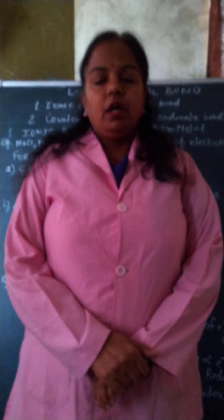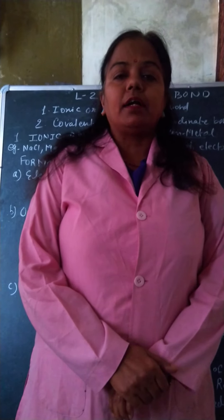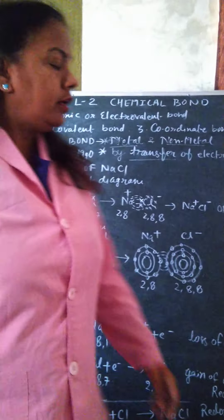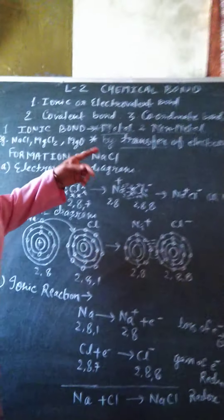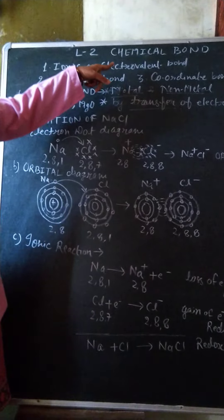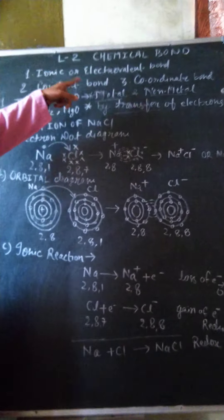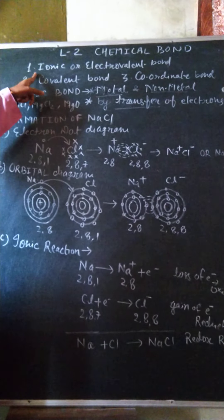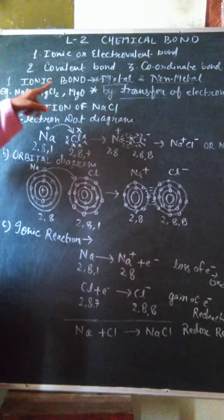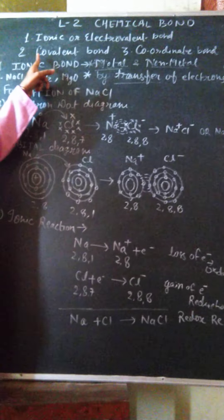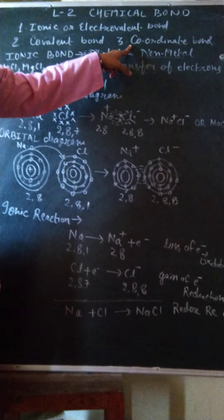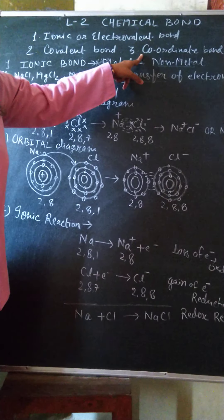Class 10. Today I will start lesson 2, which has already started actually. In this chapter, we have to see the types of chemical bonds. The first type of chemical bond is ionic or electrovalent bond. The second type of bond is covalent bond. The third type of chemical bond is coordinate bond.